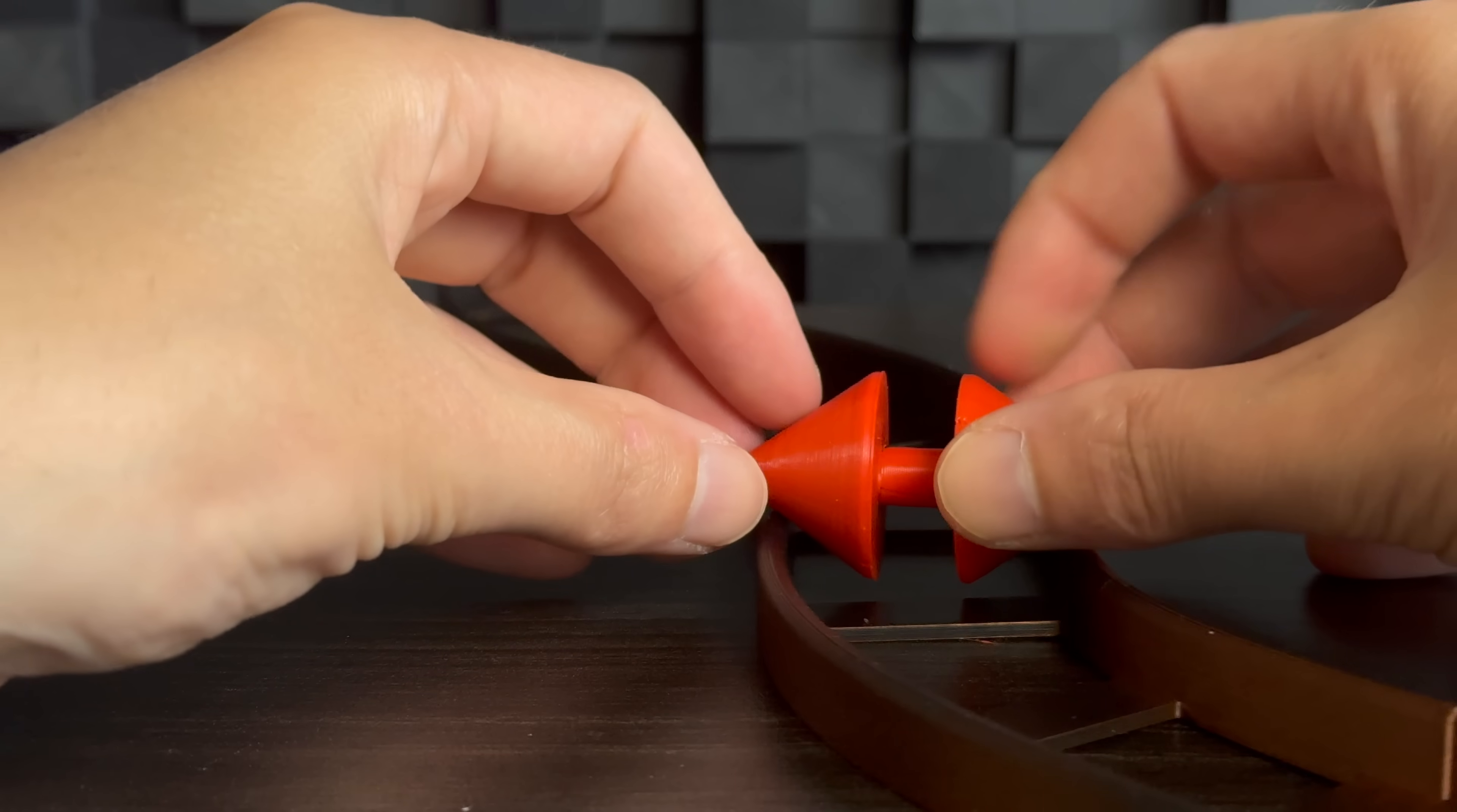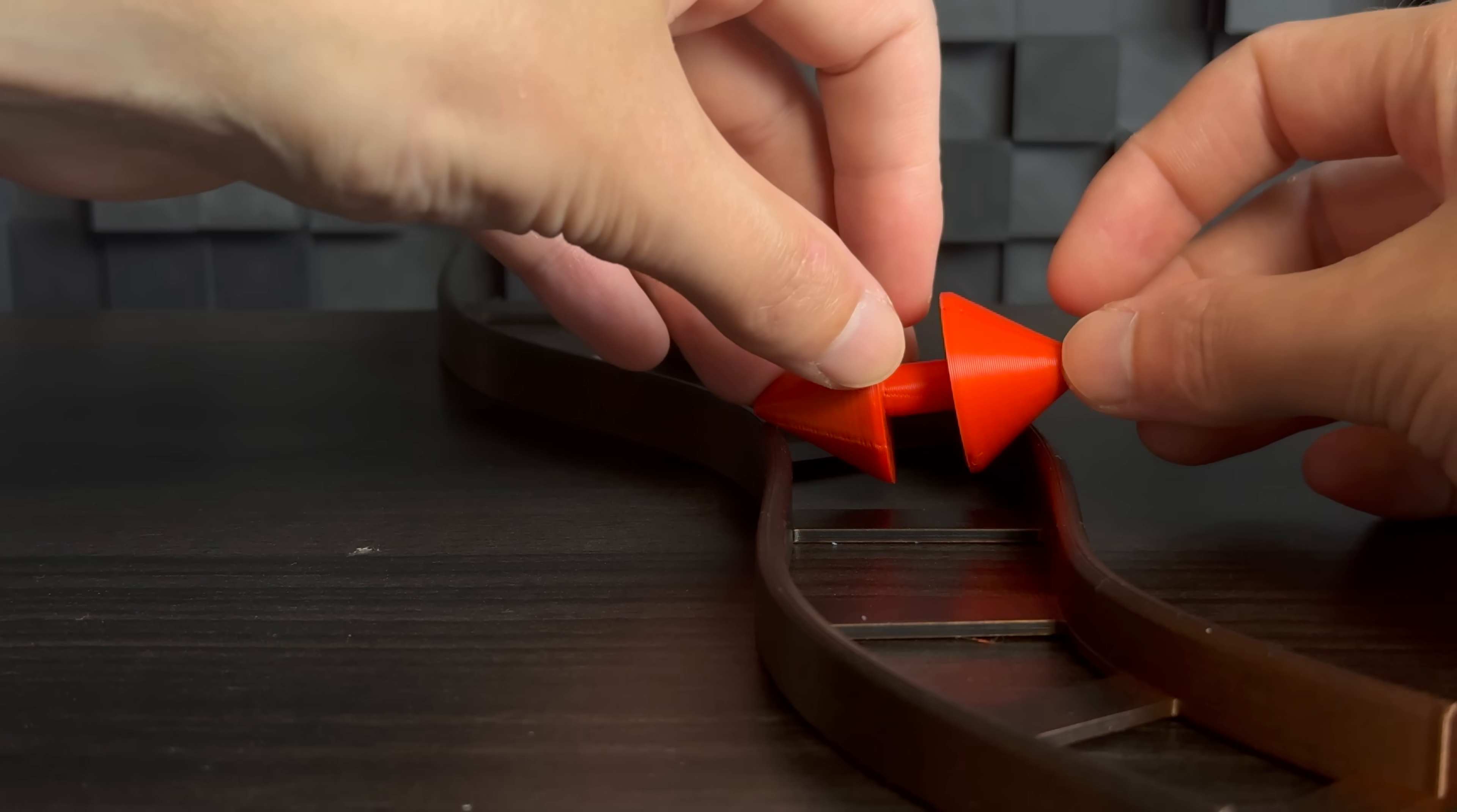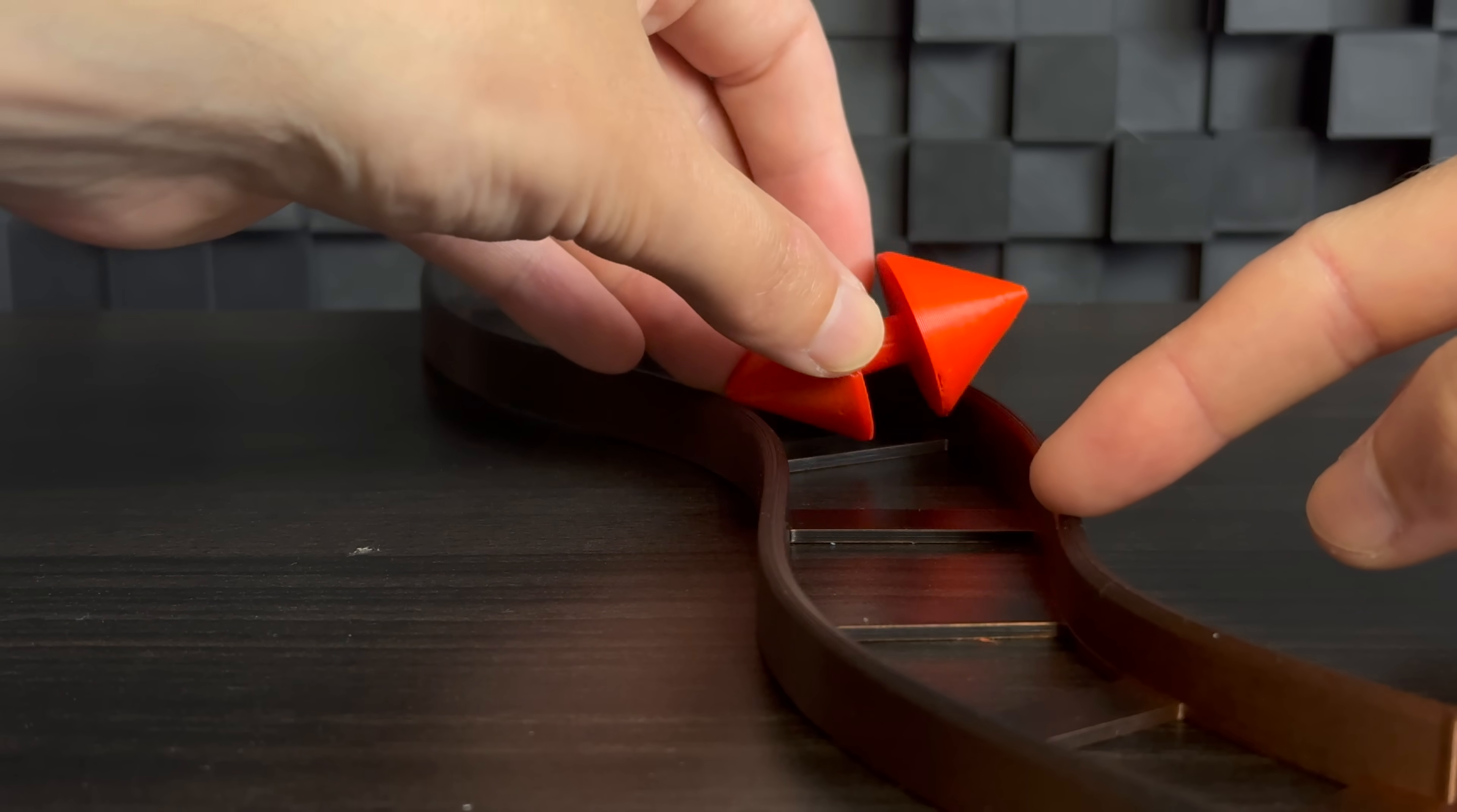And as it continues to roll straight, you'll notice now the left side has the smaller diameter and the right side has a bigger diameter. It has no other choice but to turn left.